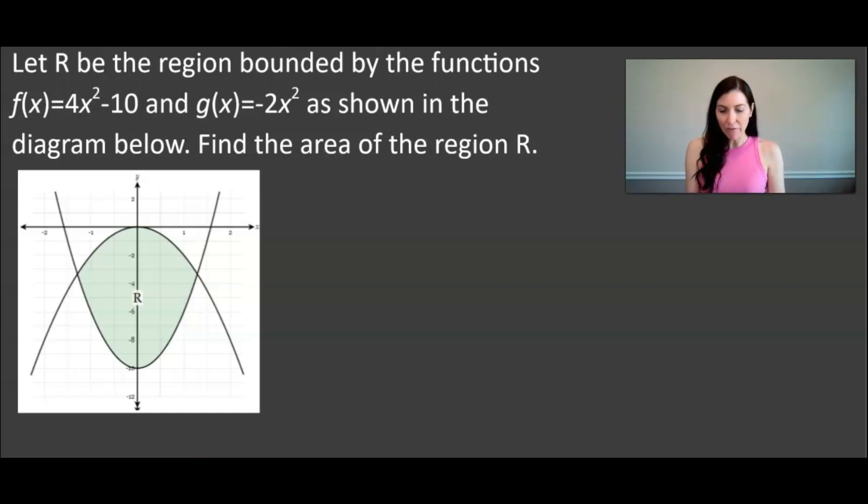Now f(x) is the function 4x² - 10. That's going to be a parabola opening up so that's this bottom function here. G(x) is -2x² and because that a value of -2 is negative, that's going to be a parabola opening down, so you can see that that's this function here.